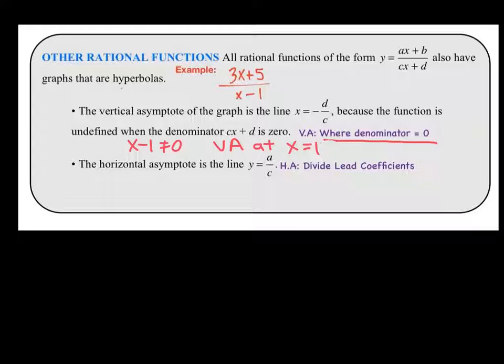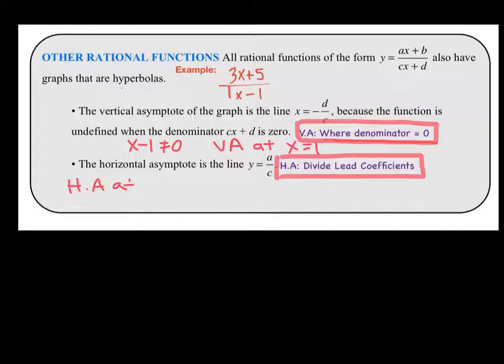Your horizontal asymptote is going to be the value when you divide your lead coefficients. Remember, your lead coefficients are the numbers attached to the variable. So a over c comes from dividing the a and c values. In our example, the horizontal asymptote, you can't see it, but there is a 1 in front of your x. So your horizontal asymptote is at whatever 3 over 1 is, which would be at 3. That's all there is to it when you have an x in the numerator and denominator, x to the first degree.